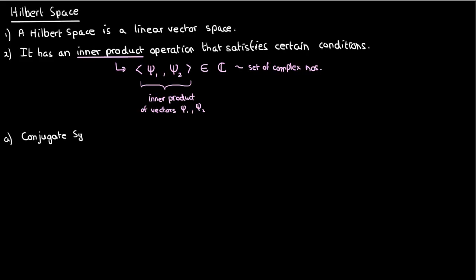One of these is conjugate symmetry. What this means is that the inner product of two elements in the Hilbert space is the complex conjugate of the inner product of the two elements but now in the opposite order. So the inner product isn't commutative but it's conjugate symmetric.